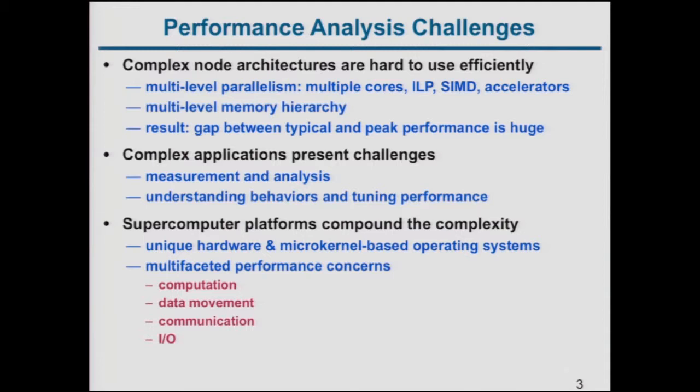As a result, the gap between possible performance and what you actually achieve is huge. Typical scientific codes might get around 5% of peak if they haven't been tuned. A well-tuned code might reach 25% of peak with a lot of effort — a factor of five that can make or break your scientific allocation.